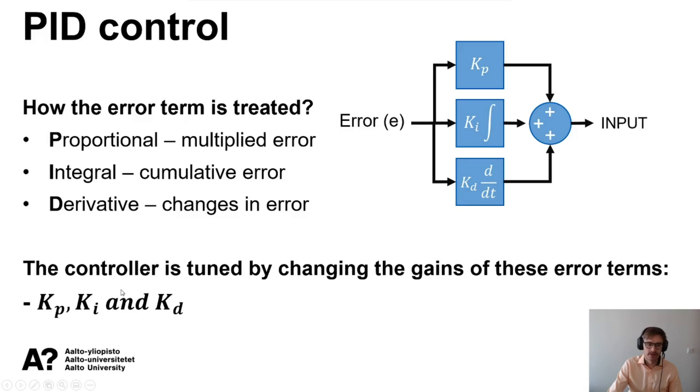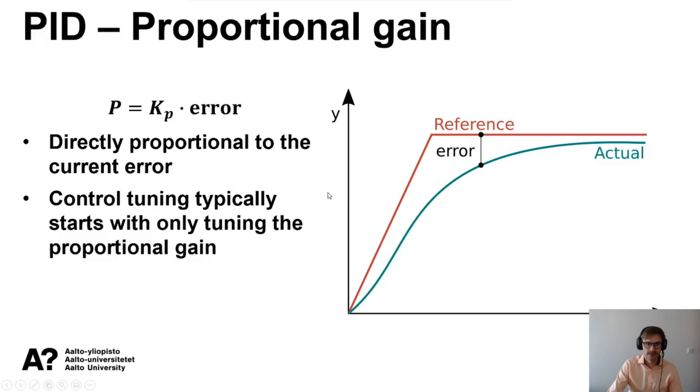We have three different parameters that we can change: KP, KI and KD of the respected error terms. The error term itself is the same, but the respected portions of PID controller.